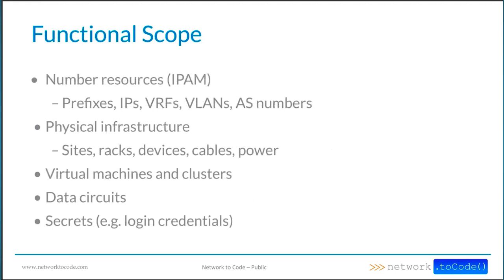So what does NetBox do? We talked about what it is — its function as a source of truth. What's the scope of it functionally? Well, basically, if you take a look at NetBox's data model, anything that shows up there as a modelable object is fair game. Conversely, if NetBox doesn't have a model for it, it's probably out of scope — at least for now. NetBox uses a rigid data model with very strong relationships among different objects. For example, a device is installed within a rack, and a rack belongs to a site, and a site can be assigned to a region, and everything can be filtered by its related models or fields.